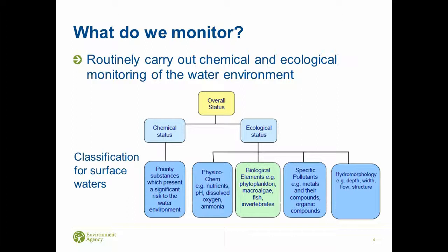We have physical-chemical elements such as nutrients, phosphates, pH, dissolved oxygen, and ammonia. We have biological elements - microscopic plants, diatoms, invertebrates, fish, and plants. We also monitor for specific pollutants like copper, zinc, and other compounds, and a range of hydromorphological elements like depth, width, and substrate. All these different elements tell us what status the water body is in.